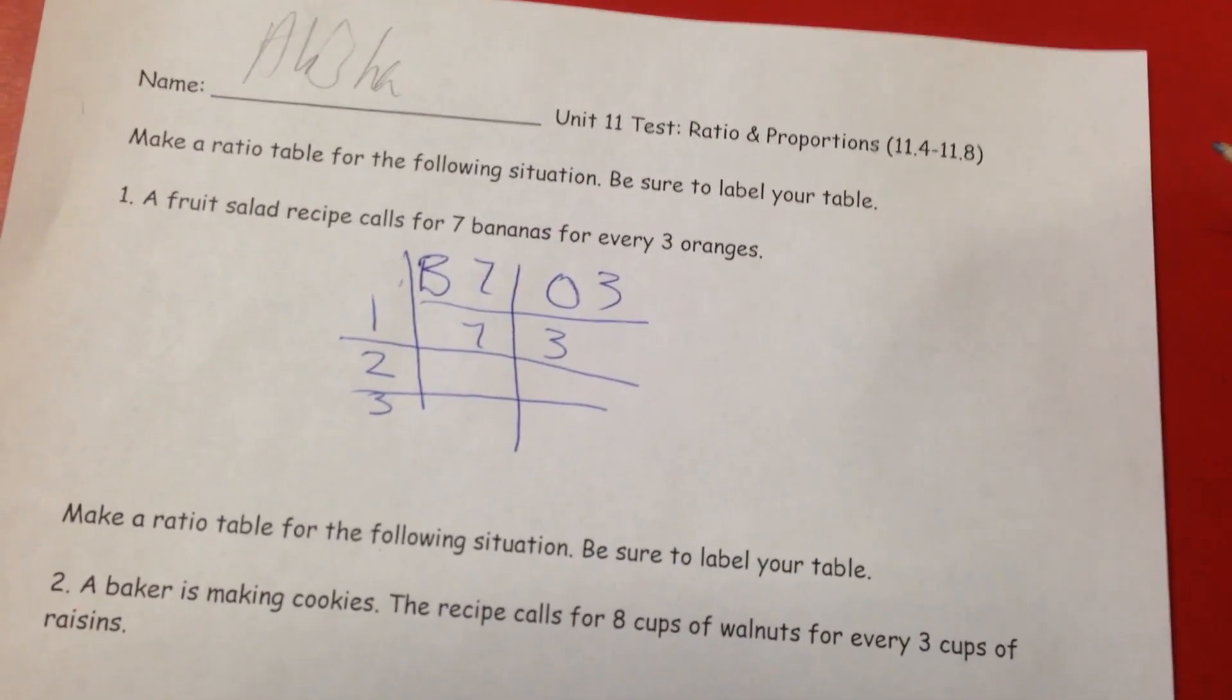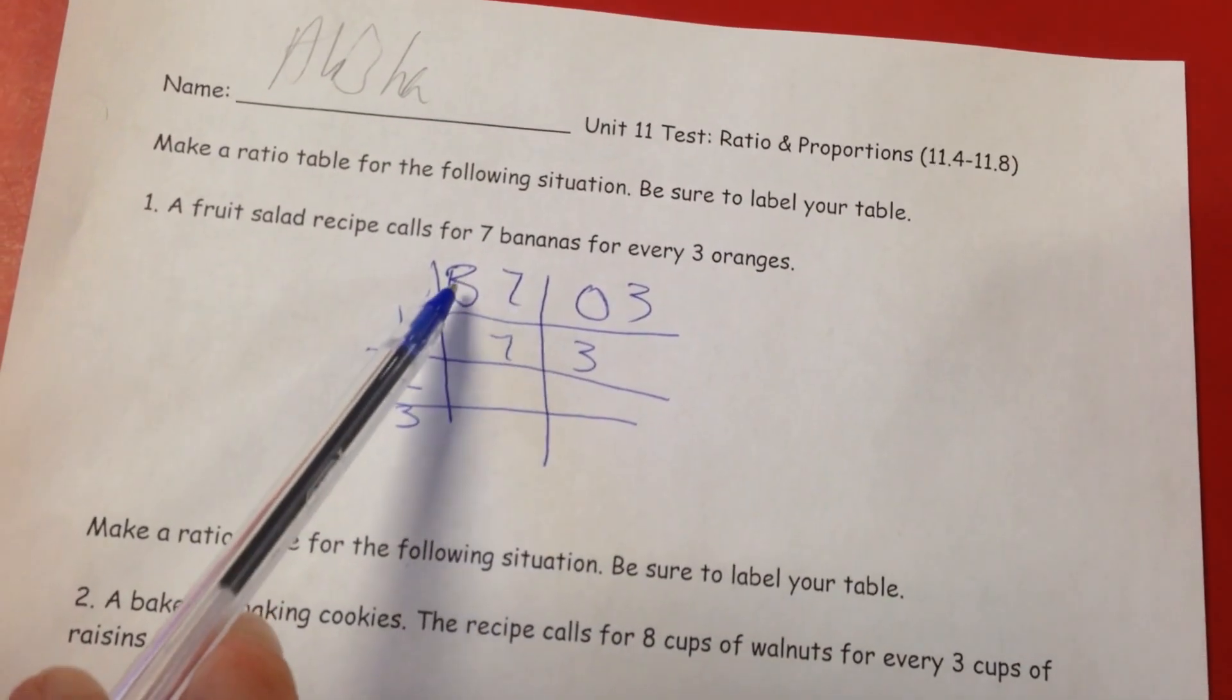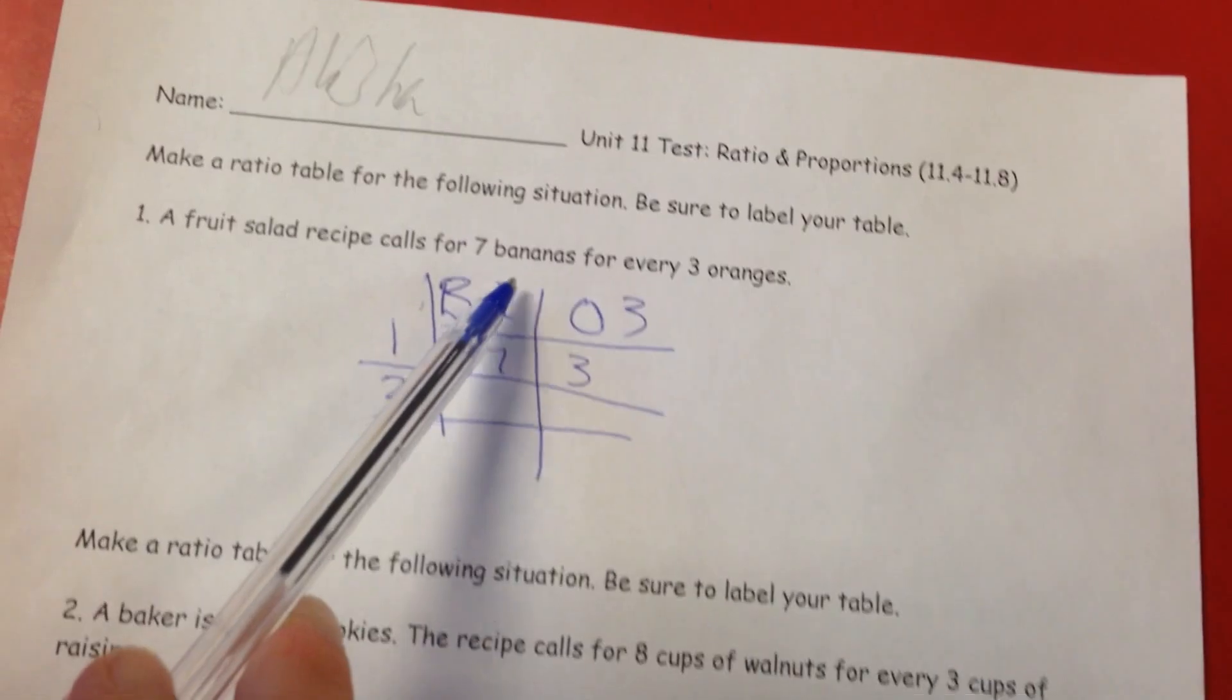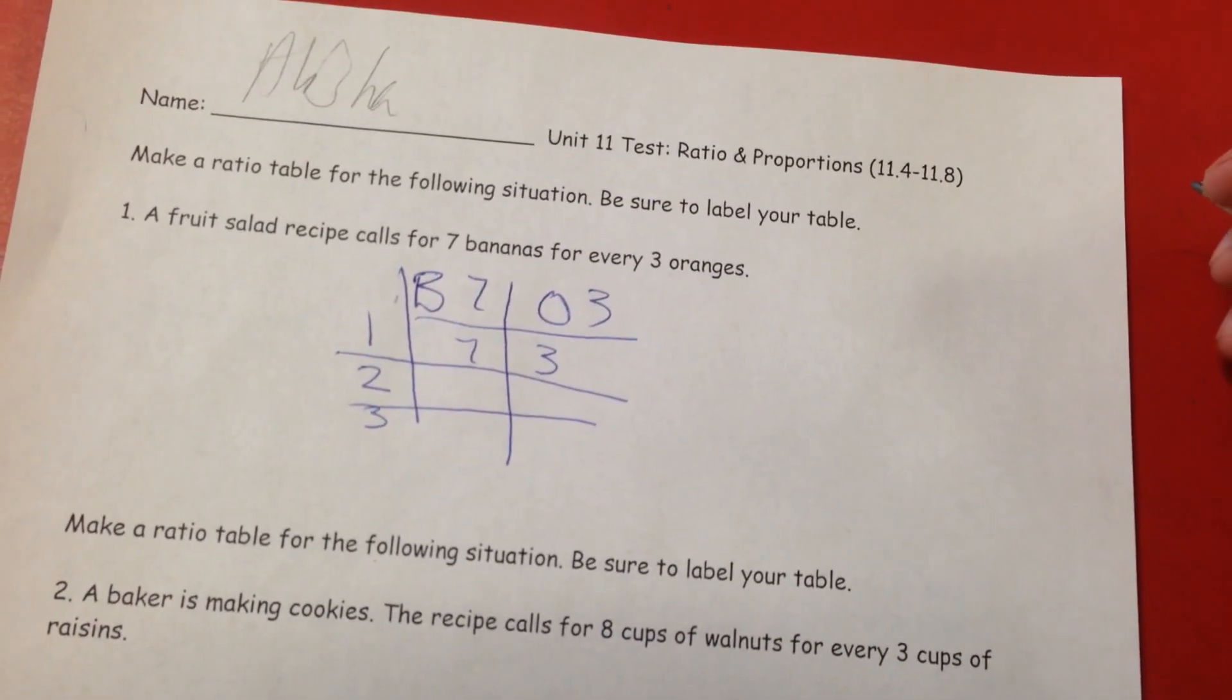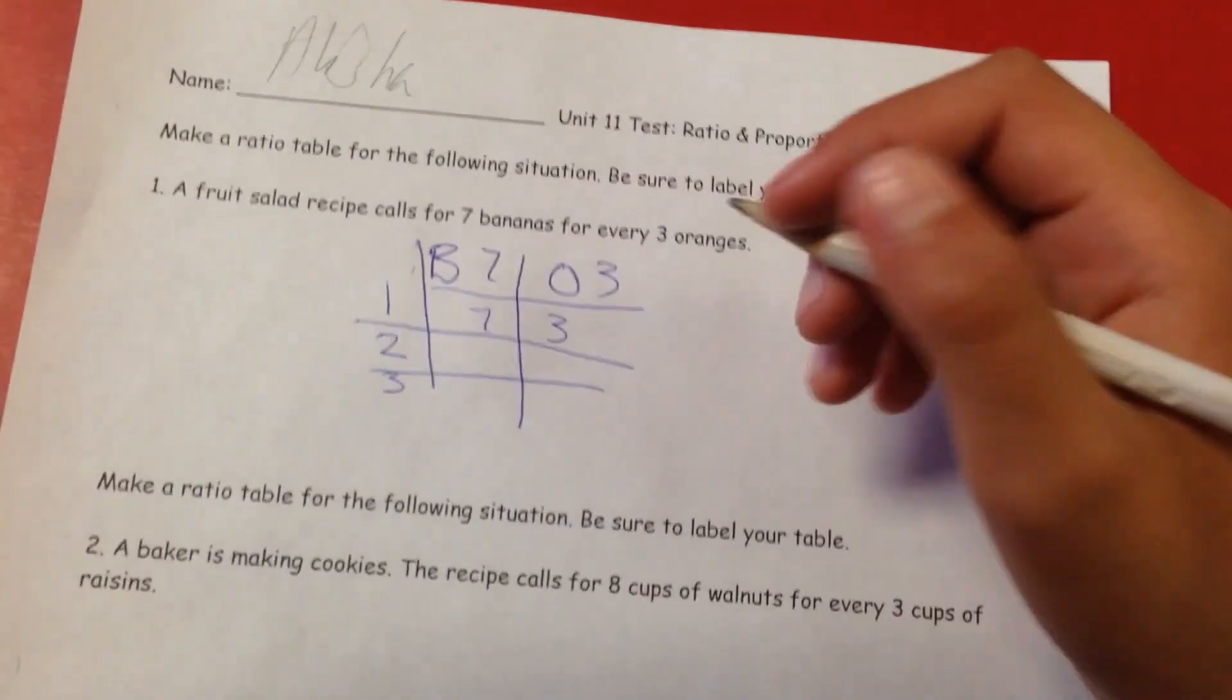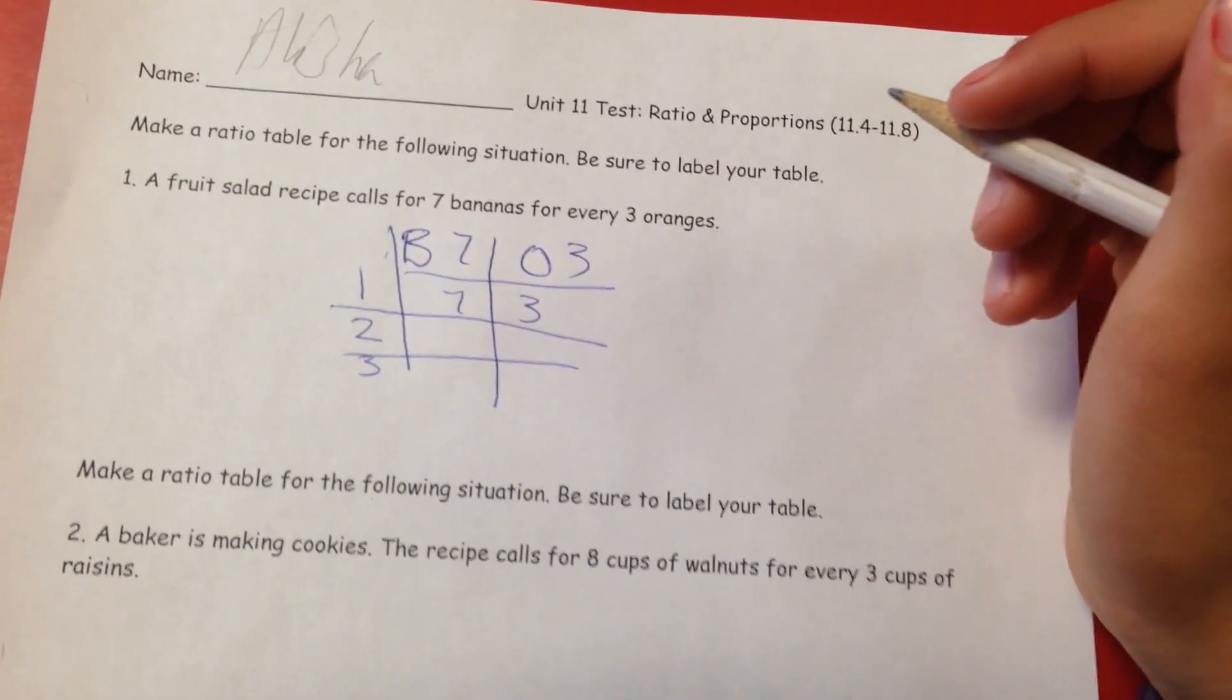And then you just label your table. We already labeled our table with bananas here and oranges here and then seven and three. So you're going to skip count sevens on here, skip count threes down the side to see how much total recipes it would call for or the ratio between the two.